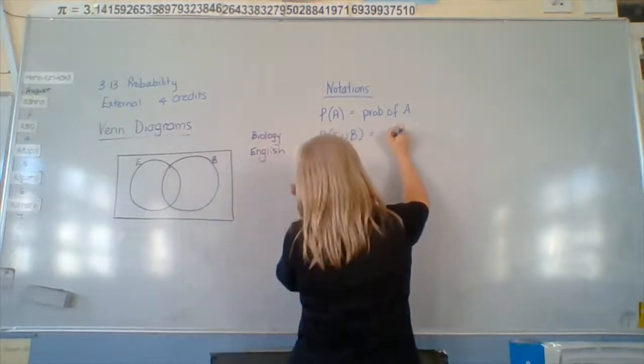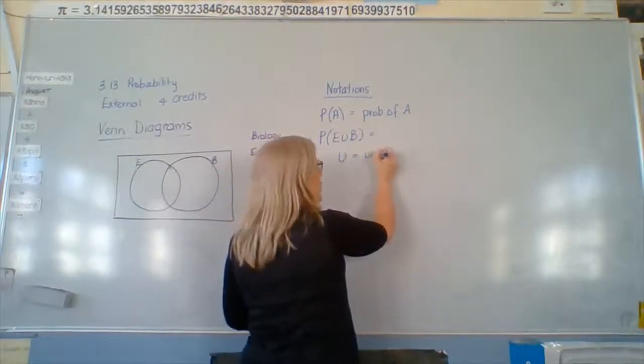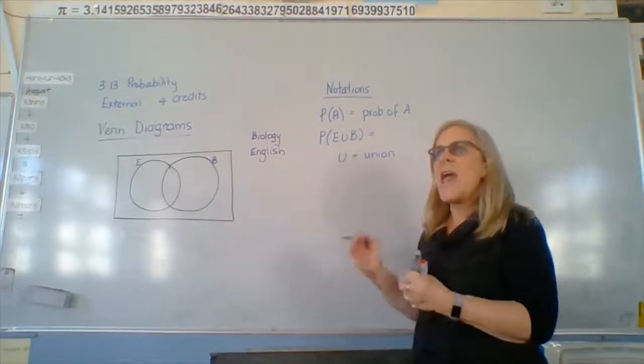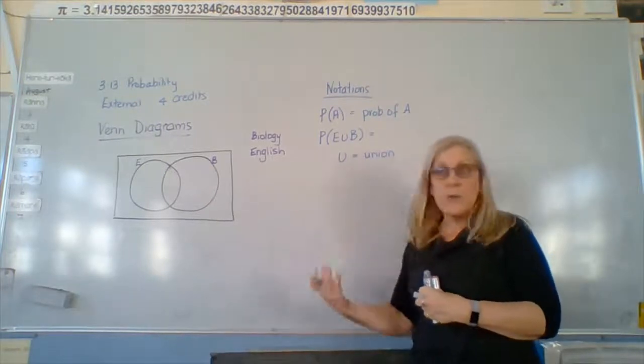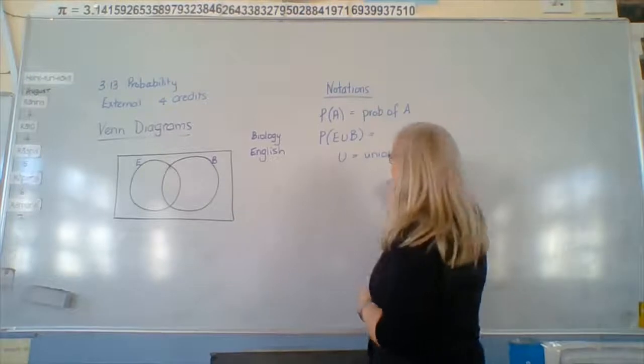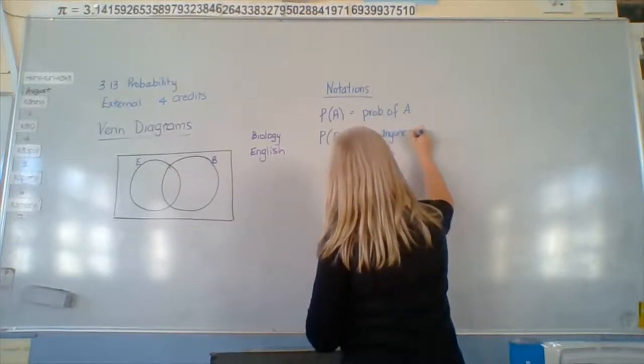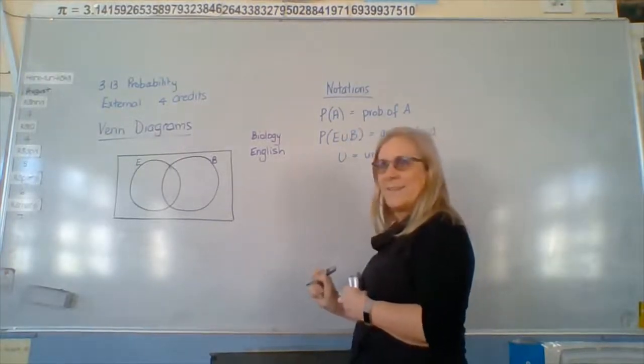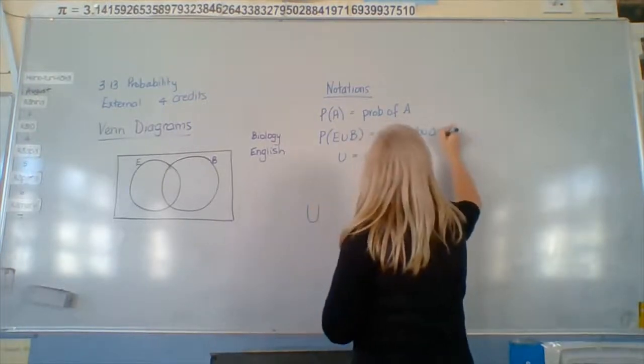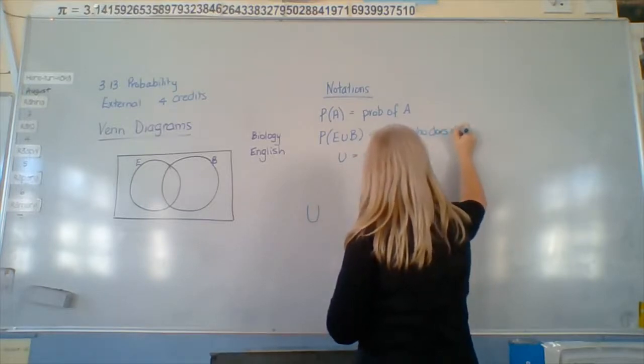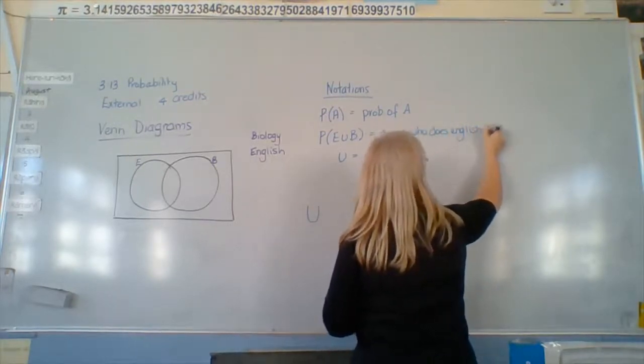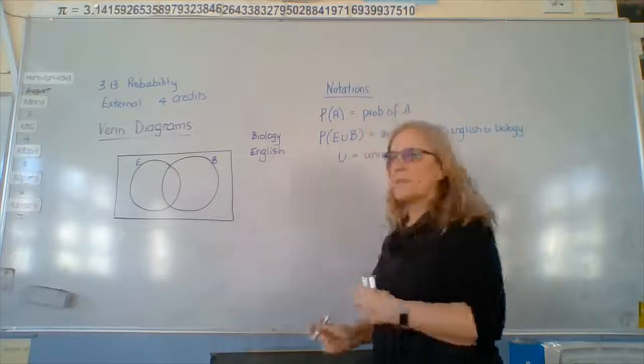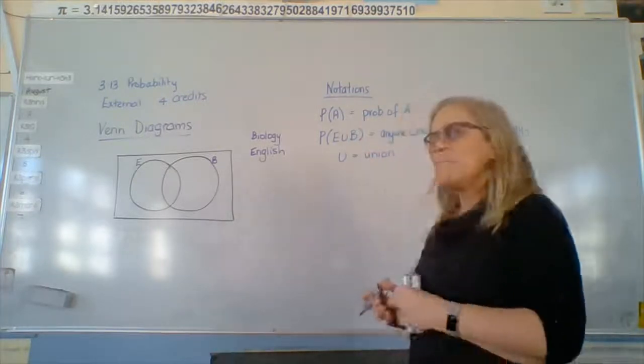Now, that U in there stands for the union of these two sets. So it's anybody who does English and or biology. Okay. So you can do them both or you can do one or the other. It's not a U. It's a... It's a... Generally, on the computer, we use a capital U. Otherwise, you have to go into all sorts of funny places to find the real symbol. All right. So that's what that one means.